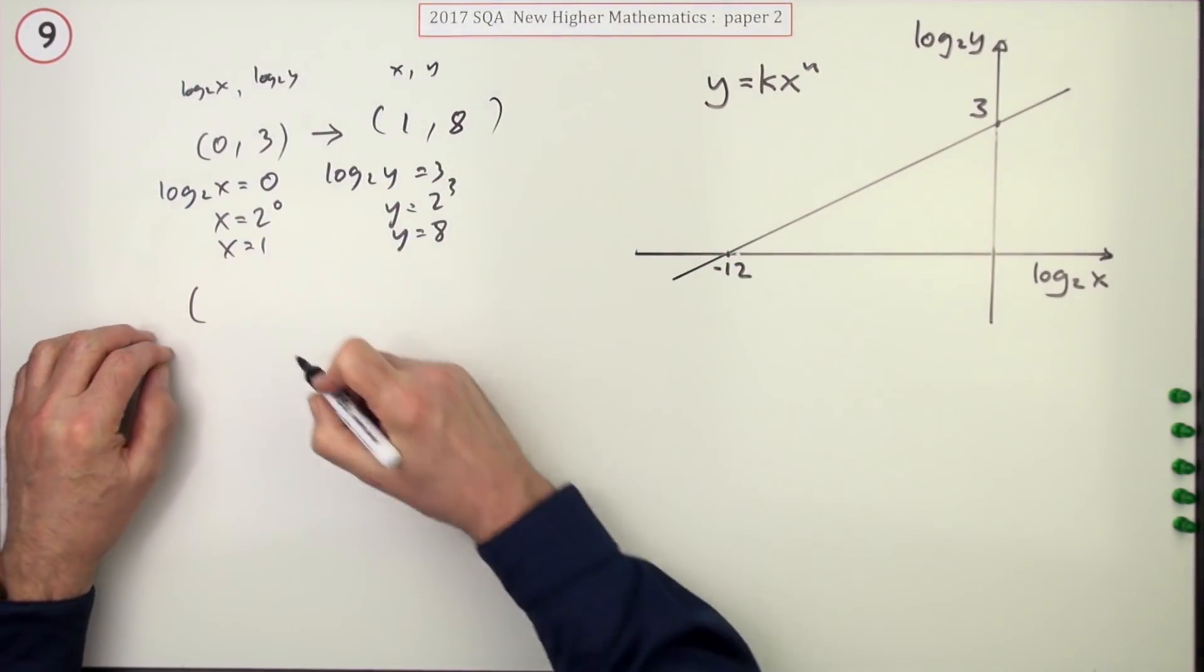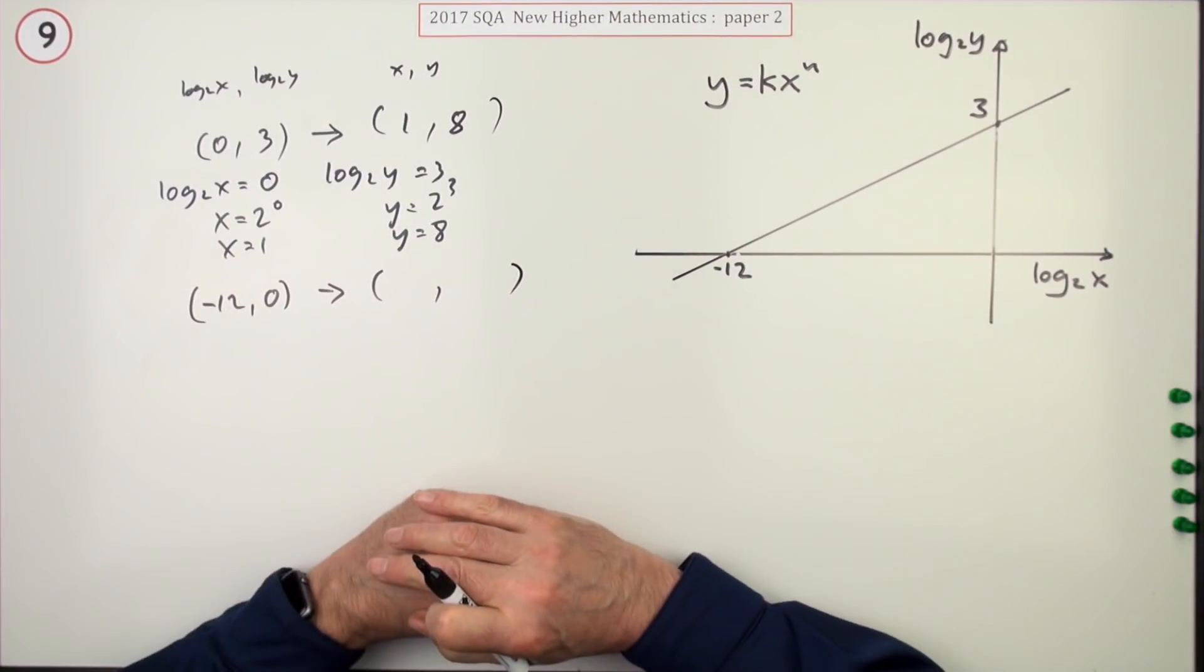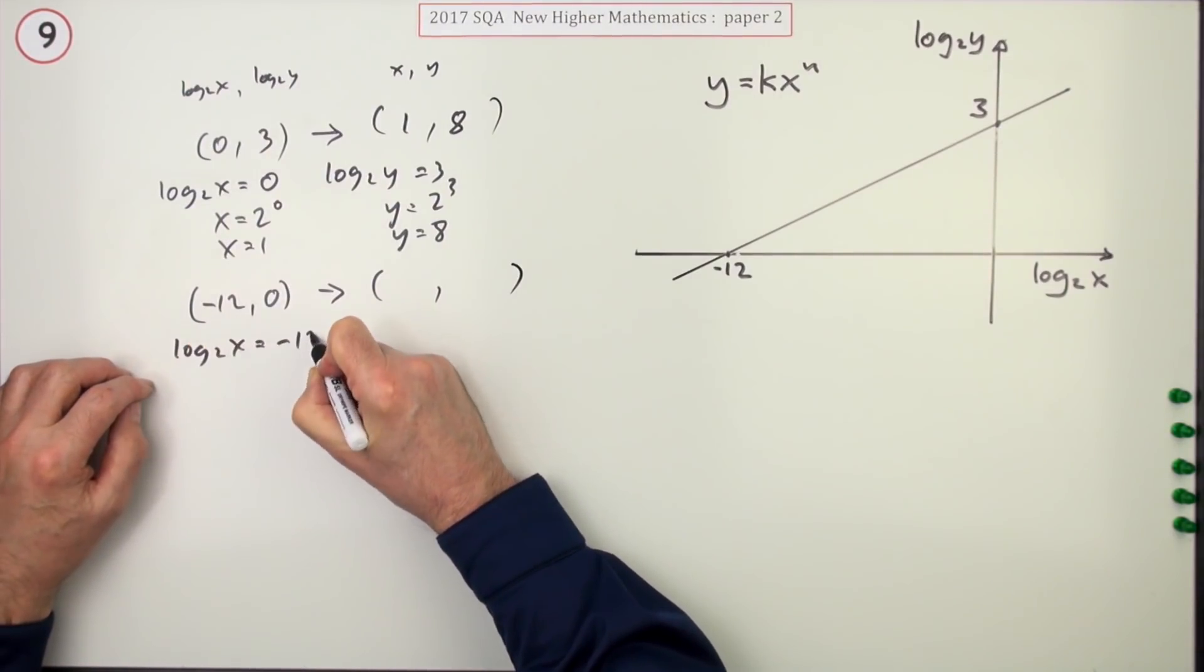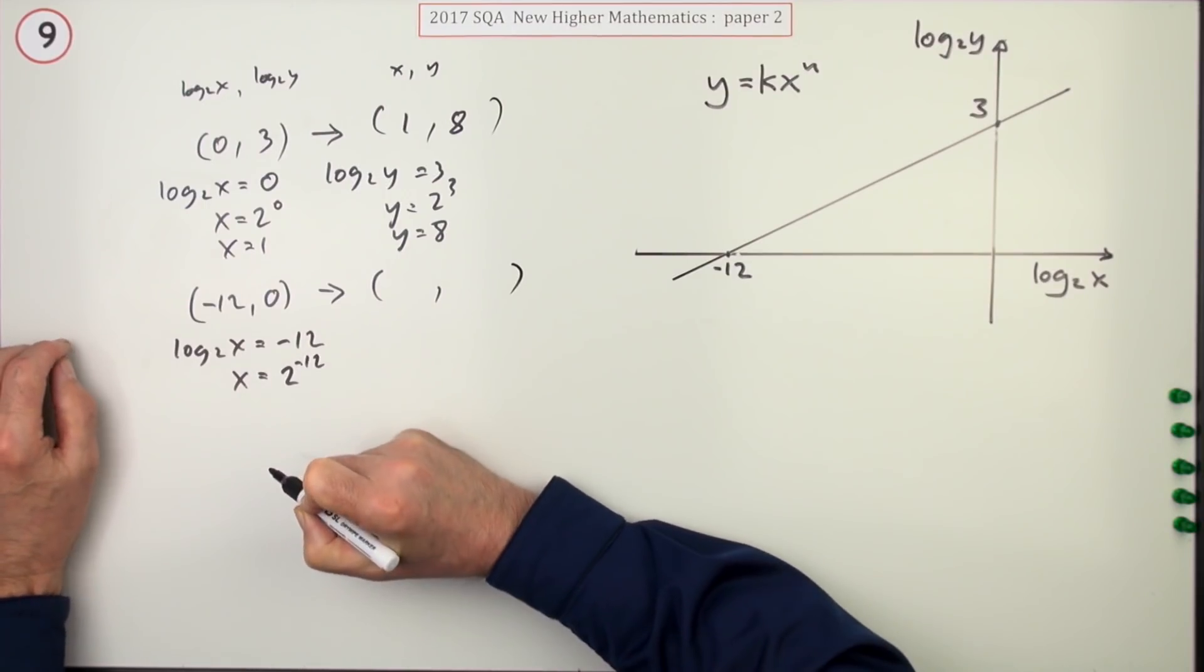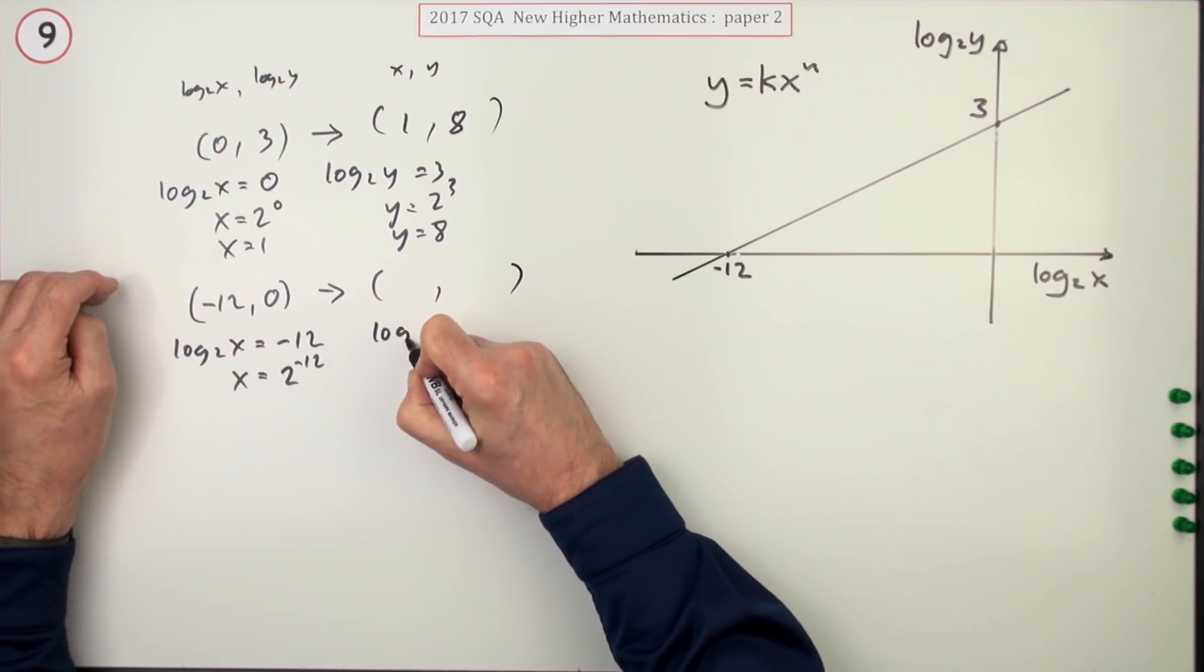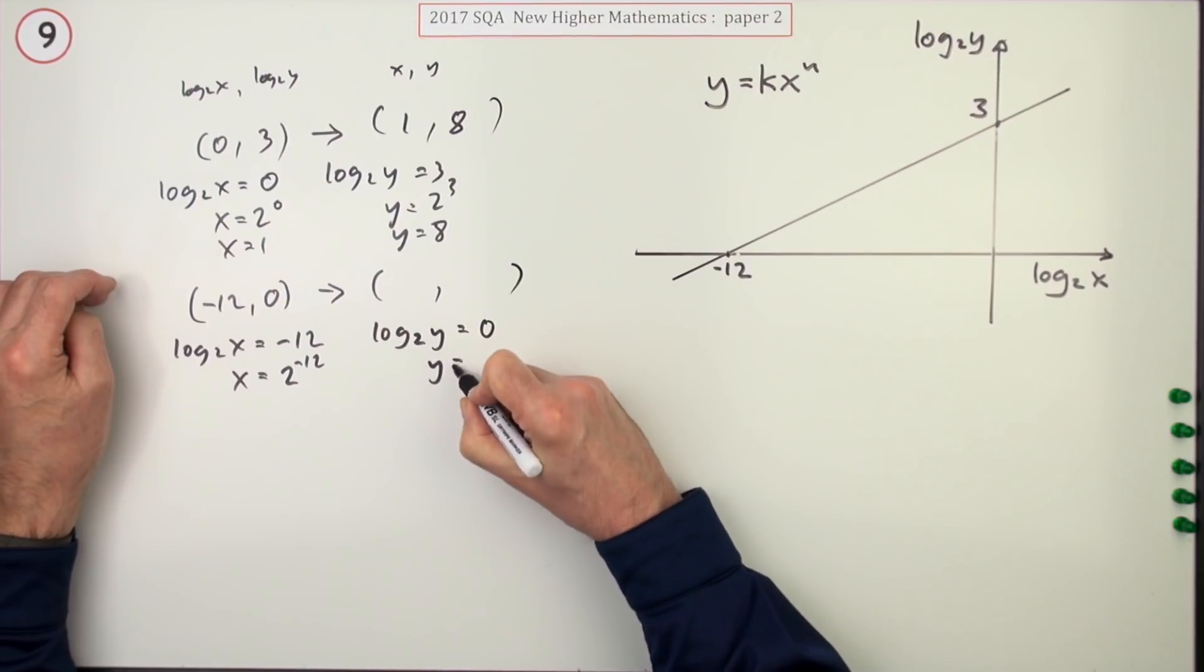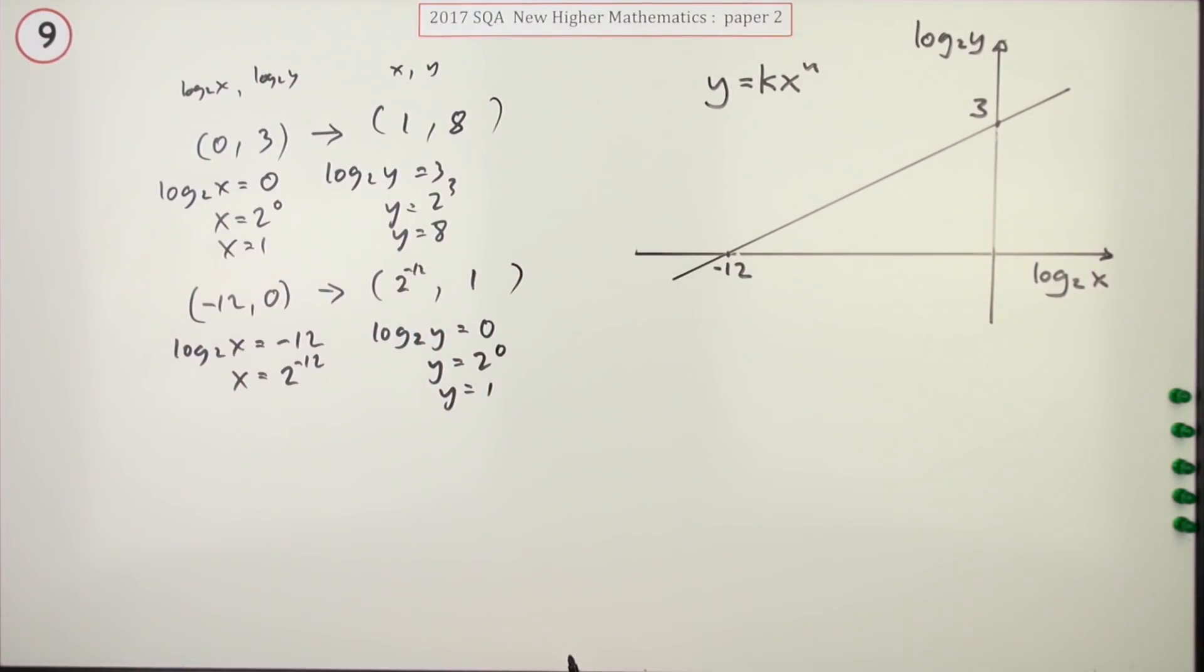The other pair is this: negative 12, 0. What does that go to? Same again. Log base 2 of x is negative 12, which means x is 2 to the power negative 12. Maybe I'll just leave it like that. I don't want to write that out properly. And log base 2 of y is 0, which means y is 2 to the power 0, so y is 1. So that's 2 to the negative 12, unfortunately.